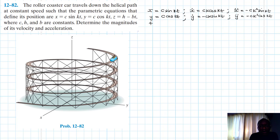And then we have z, which is h - bt. So z dot is just going to be equal to -b, and z double dot in the z direction is just equal to zero.